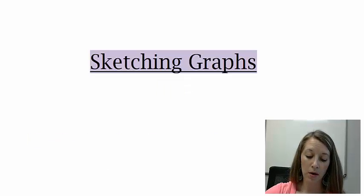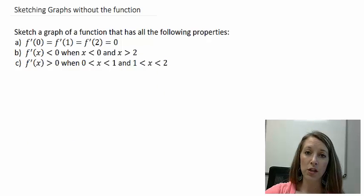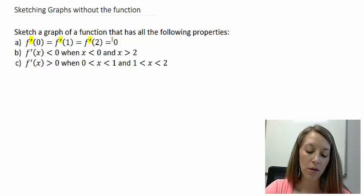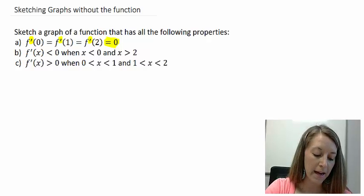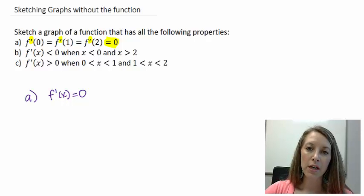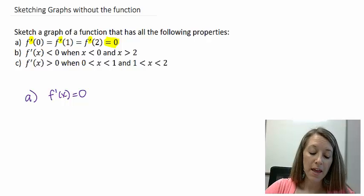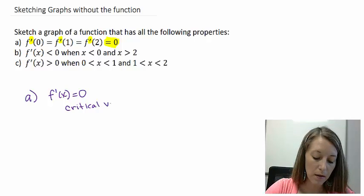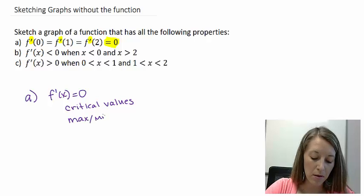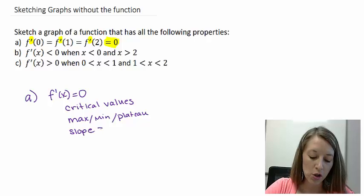Here it doesn't give us the original function, but it gives us information about the first derivative. In this specific example, it tells us that f'(0), f'(1), and f'(2) are all equal to zero. When f' of something equals zero, we think about finding critical values — the same process we use when determining increasing, decreasing, maximums, and minimums. Critical values tell us we have either a maximum, a minimum, or a plateau at those points.